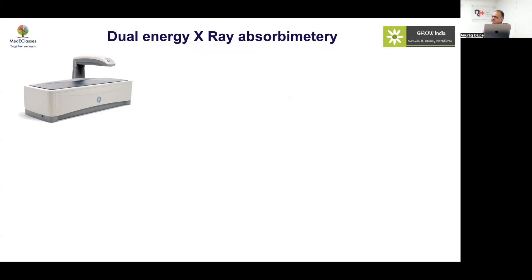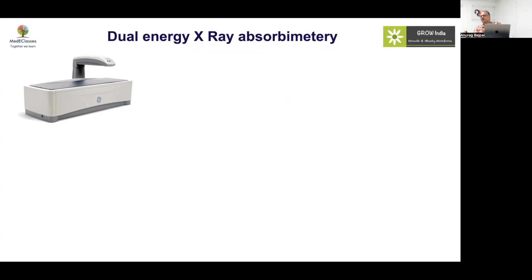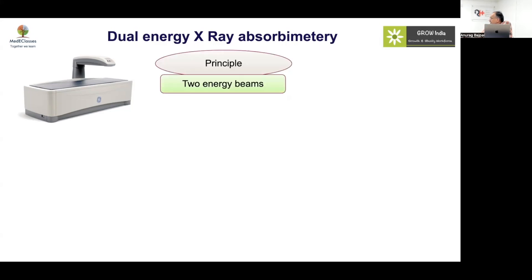Unlike a conventional X-ray which uses a single beam, DEXA uses a dual beam. The attenuation constant — how much of the beam is absorbed — differs for fat, muscle, and bone. By using two different energy beams, one high-energy and one low-energy, and differentiating their attenuation, you get a much better picture. It's based upon two different energy beams with differential uptake.